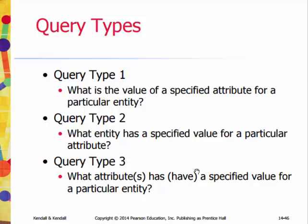There are six basic query types, and each query involves three items: the entity, the attribute, and the value. In each case, two of these are given and the intent of the query is to find the remaining item. Query type one: the entity and one attribute are given, and the purpose is to find the value — expressed as: what is the value of a specified attribute for a particular entity? Query type two: the intent is to find the entity when an attribute and value are given — what entity has a specified value for a particular attribute? Query type three: the purpose is to determine which attributes fit the description when the entity and value are given — what attribute or attributes has a specified value for a particular entity?